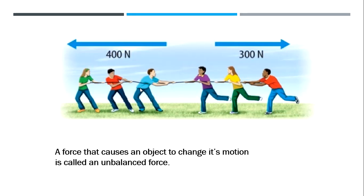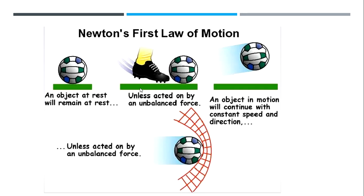After studying balanced and unbalanced forces, Sir Isaac Newton wrote his first law of motion. Newton's first law states that an object at rest tends to stay at rest, and an object in constant motion tends to stay in motion, unless acted upon by an unbalanced force. For example, a football at rest will stay at rest — unless you kick it, and then it will move.